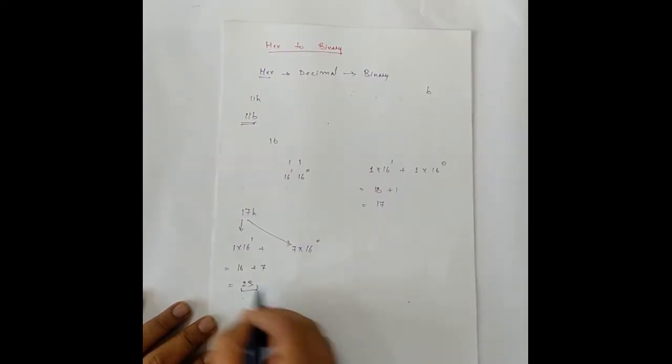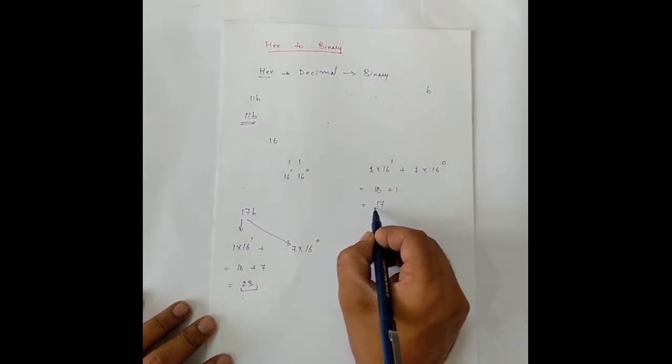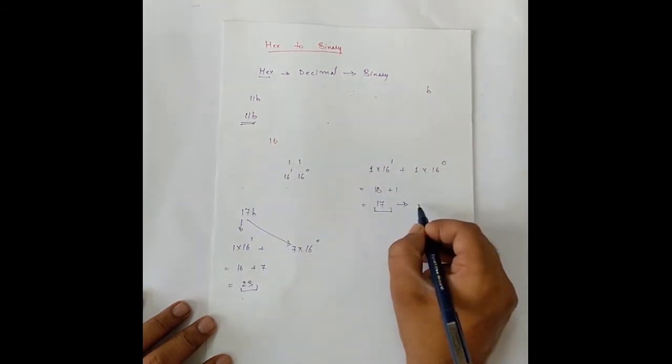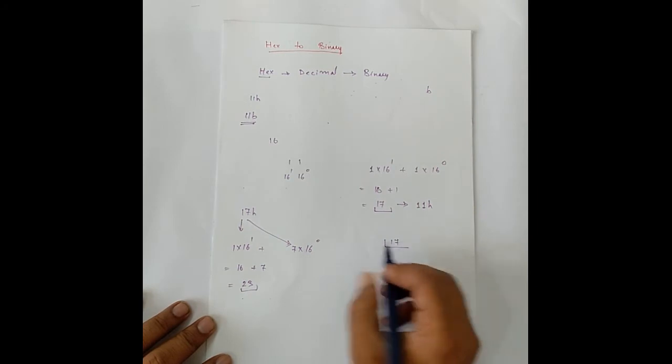Now, once we have the decimal number, we convert it to binary. So, to convert to binary, we will take this was the decimal for 11 in hexadecimal. This is 11h. So, let's take 17 and convert it to binary.